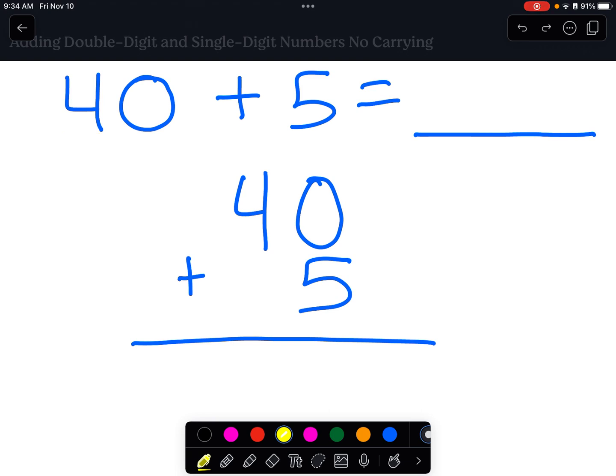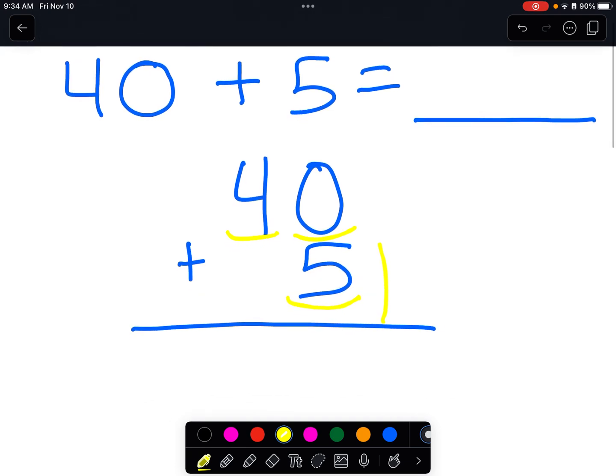Now, what we want to do is we've got zero in the ones place, four in the tens place, and we want to make sure that we line everything up just right. We've got five in the ones place. So you really want to make sure it's lined up, up and down perfectly, or as perfect as you can make it.